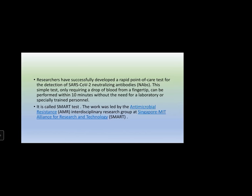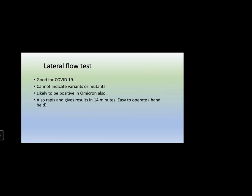The possible targets are: gene, antibody, and antigen. For rapid tests, antigen may also be the target. To detect antibody, we need blood or serum; to detect antigen or gene products, we need the nasopharyngeal aspirate. The self-test or card tests we do are basically lateral flow tests, which can be either diagnostic or detect the infection. They are good for COVID-19 but cannot indicate variants or mutants.